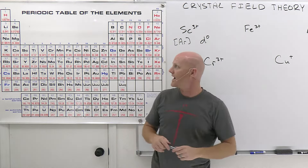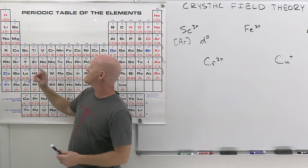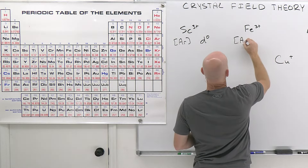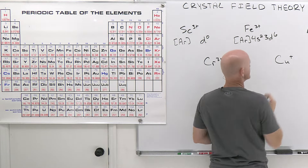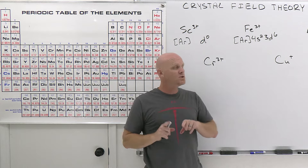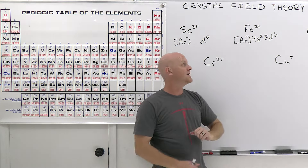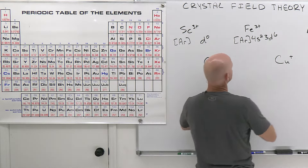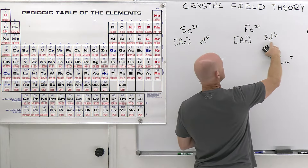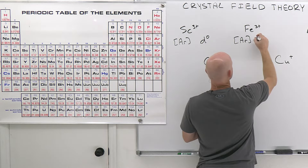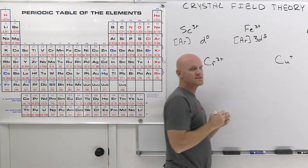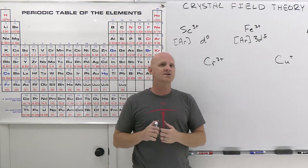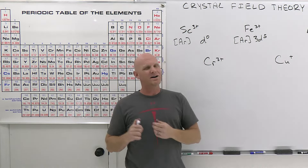Moving on to Fe³⁺: iron is [Ar] 4s² 3d⁶. To form Fe³⁺, remove three electrons — pull the 4s electrons out first (two electrons gone), then remove one 3d electron, leaving [Ar] 3d⁵. If you come up with [Ar] 4s² 3d³, you've done it wrong. Fe³⁺ has 5 d electrons, which is relevant for the complexes it forms.